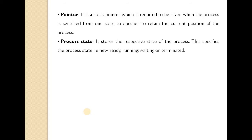The second field of the PCB is process state. It stores the respective state of the process — specifying whether the process is in the new, ready, running, waiting, or terminated state. At any given time, the current state of the process is stored in this field.